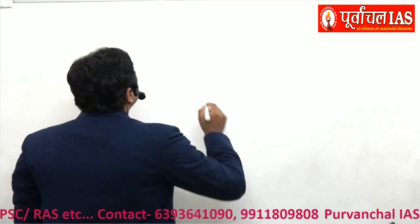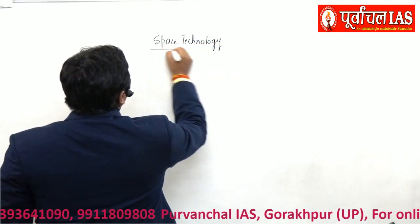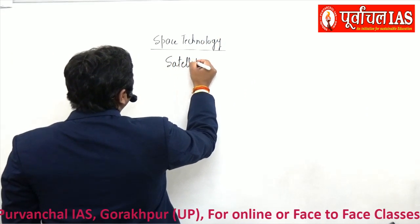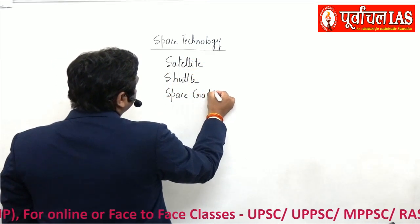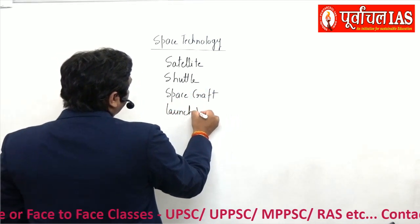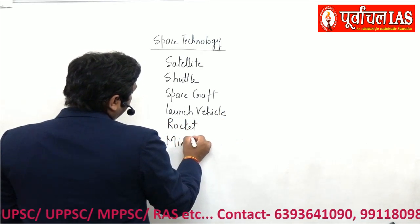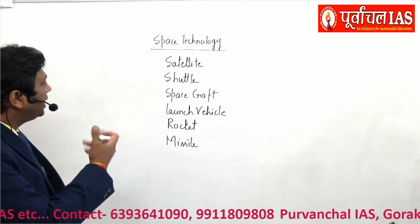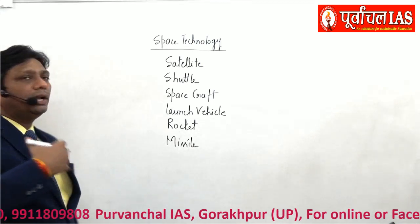In space technology, the important terms are: satellite, shuttle, spacecraft, launch vehicle, rocket, and missile. These six terms are important. Some applications shown here are for constructive users, and others are for destructive users. I will explain everything slowly and gradually.